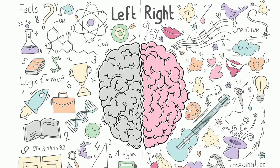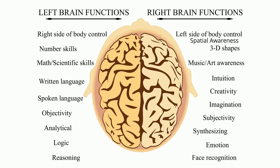The brain can be further divided into two hemispheres, the left hemisphere and the right hemisphere. Each hemisphere is responsible for different functions. In general, the left hemisphere controls language as well as reading, writing, logic, and problem solving along with mathematics.